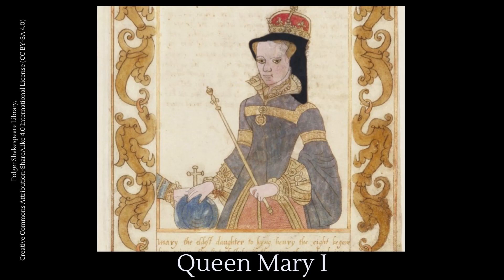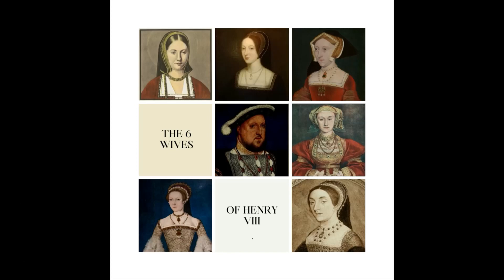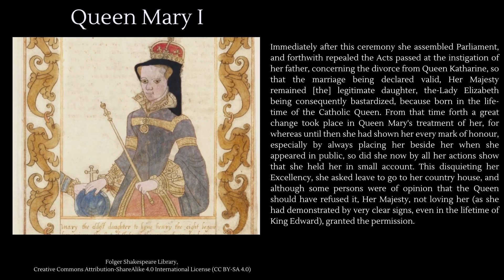Mary was crowned on 1 October at Westminster Abbey and Elizabeth and their former stepmother Anne of Cleves sat next to her at her coronation banquet in the positions of greatest honour. After the coronation, things began to deteriorate between Mary and Elizabeth almost immediately, as a report by the Venetian ambassador explains. Immediately after the ceremony, she assembled Parliament and forthwith repealed the acts past the instigation of her father concerning the divorce from Queen Catherine, so that the marriage being declared valid, Her Majesty remained the legitimate daughter, the Lady Elizabeth being consequently bastardised, because born in the lifetime of the Catholic Queen. From that time forth a great change took place in Queen Mary's treatment of her, for whereas until then she had shown her every mark of honour, especially by always placing her beside her when she appeared in public, so did she now, by all her actions, show that she held her in small account.